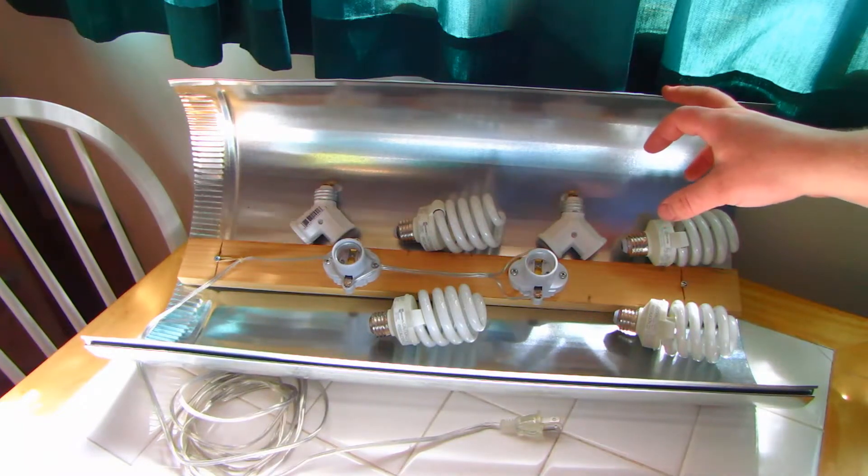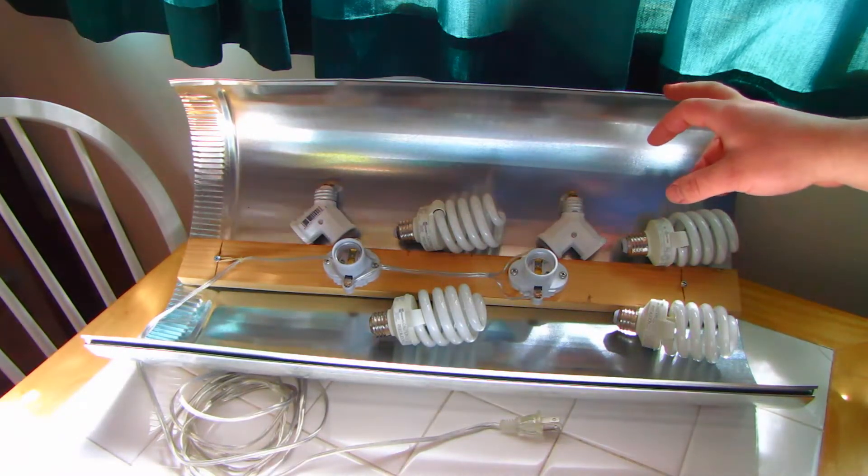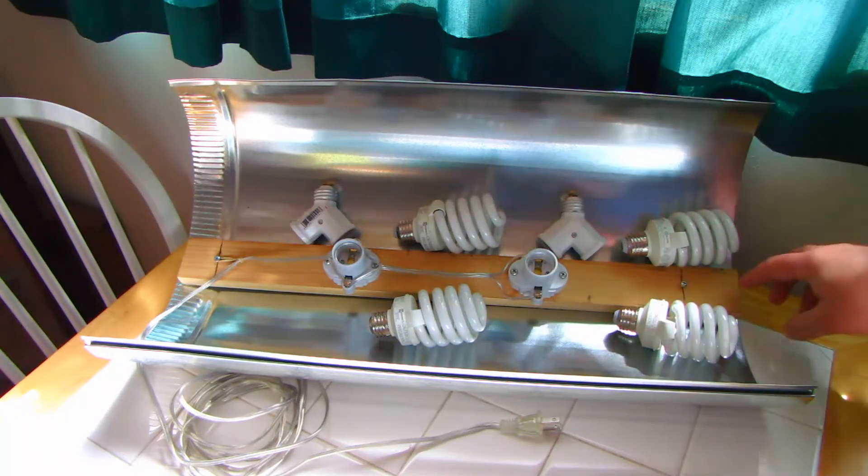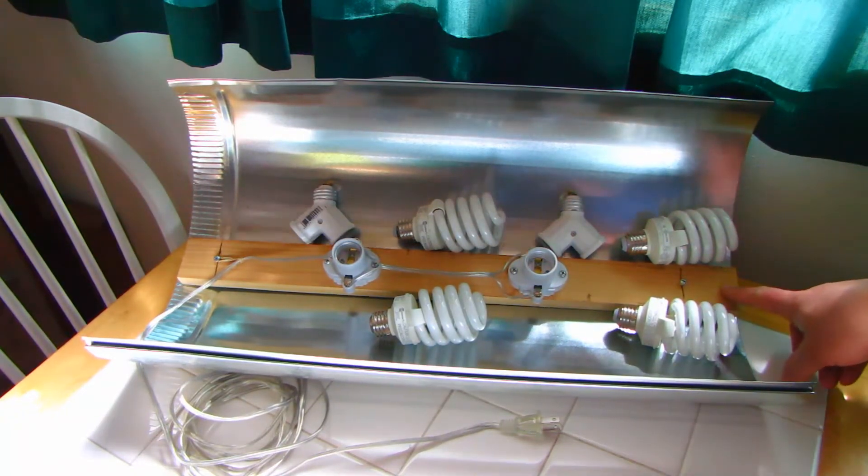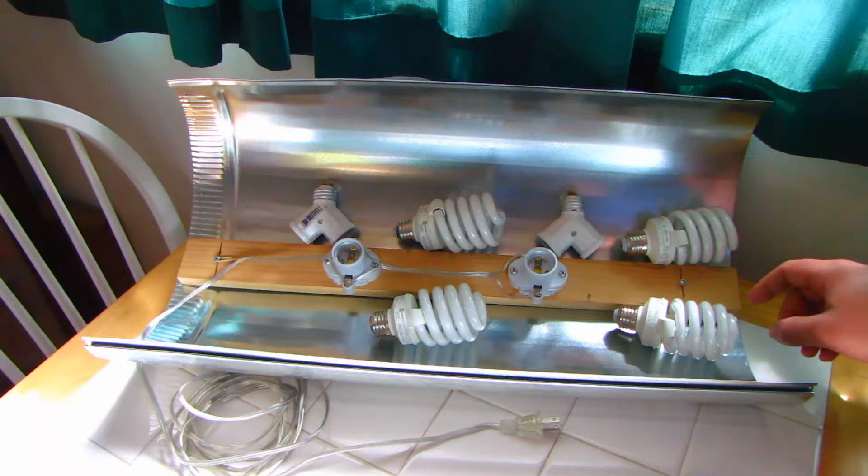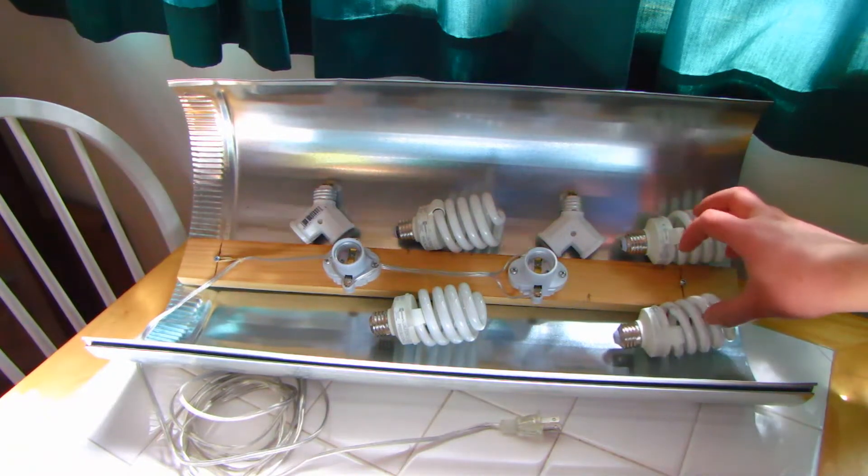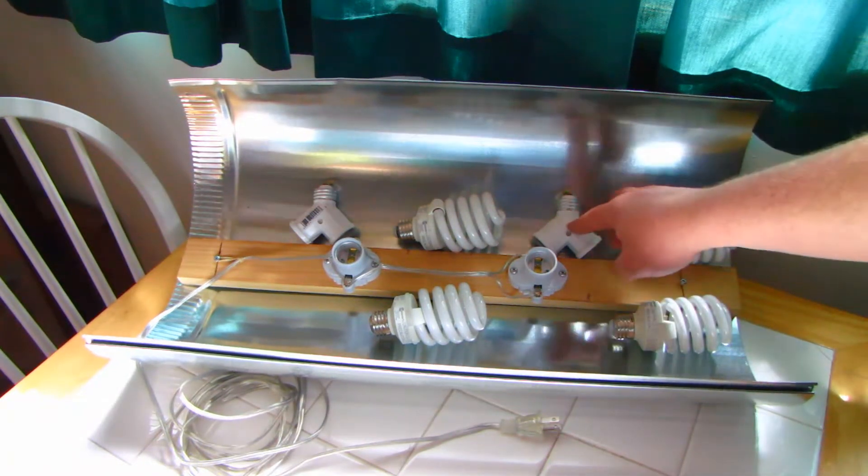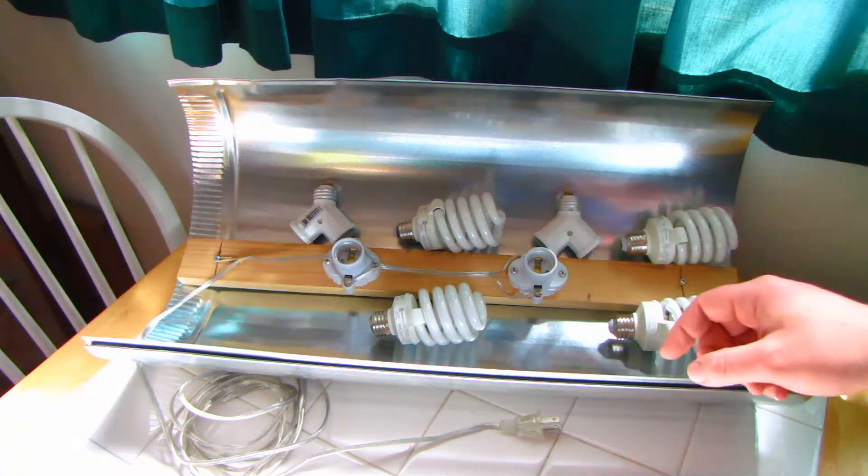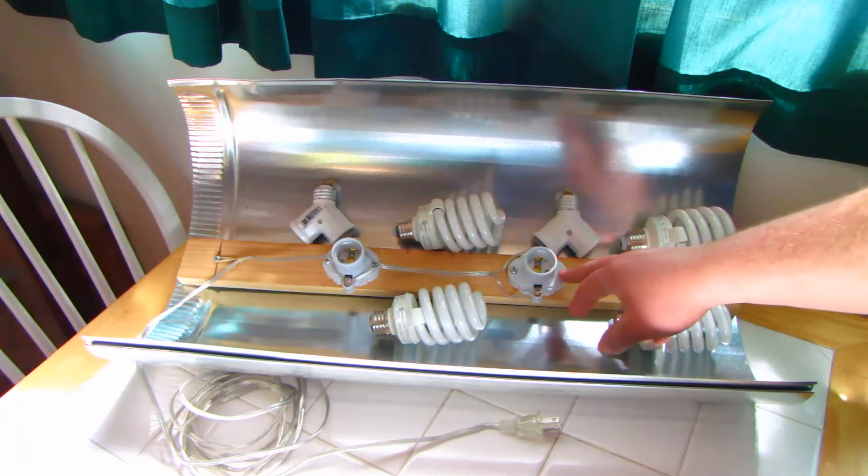For the reflector, I'm using a piece of duct work, stretched out a little bit. I found the center to mount my scrap piece of wood to. Bulbs were found at Home Depot and the splitter was found at Home Depot. You'll need a few screws to mount everything.